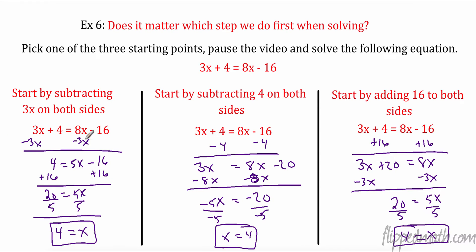So over here, I subtracted 3x from both sides, then added 16, and got 5x equals 20, so x equals 4. Over here, I subtracted 4 from both sides — notice this made it a negative 20 — but when I subtracted the x's, I got a negative 5x, and a negative divided by a negative equals a positive 4. This one, I added 16 to both sides, and again got 5x equals 20.